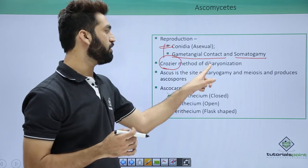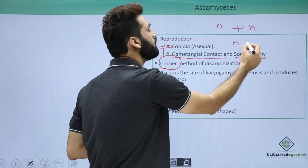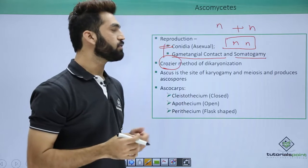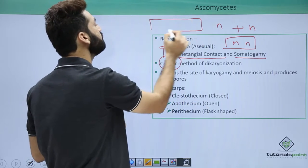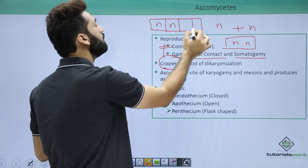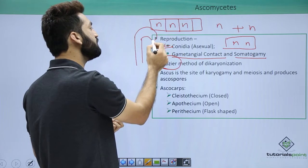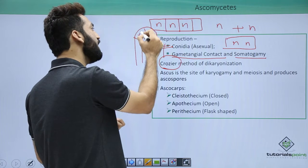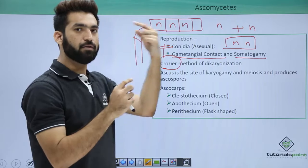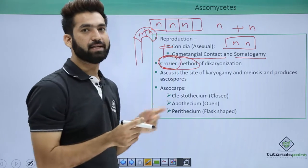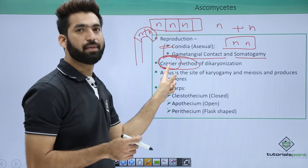Dikaryotization means you have one nucleus and another nucleus; both of them come together and sit, forming what is called the dikaryon stage. When the mycelium takes a shape like a crozier — a hooked shape — the two n nuclei are brought close together so they can pair up and form the dikaryon state. This particular method is called the crozier method of dikaryotization, and it has been asked in exams.